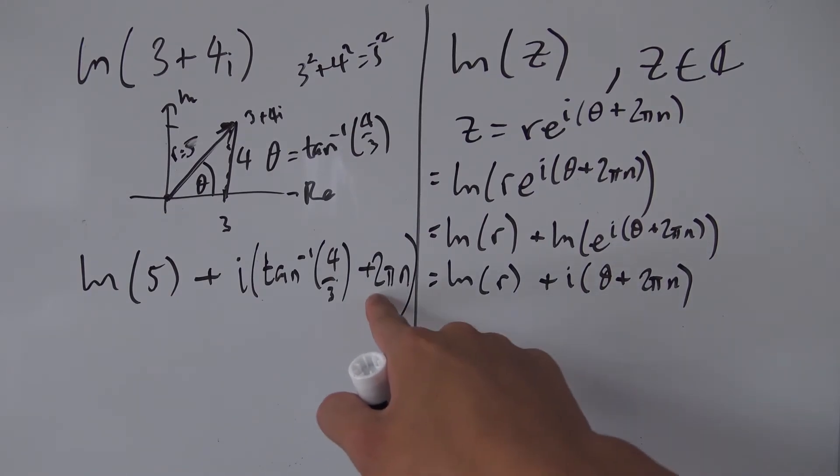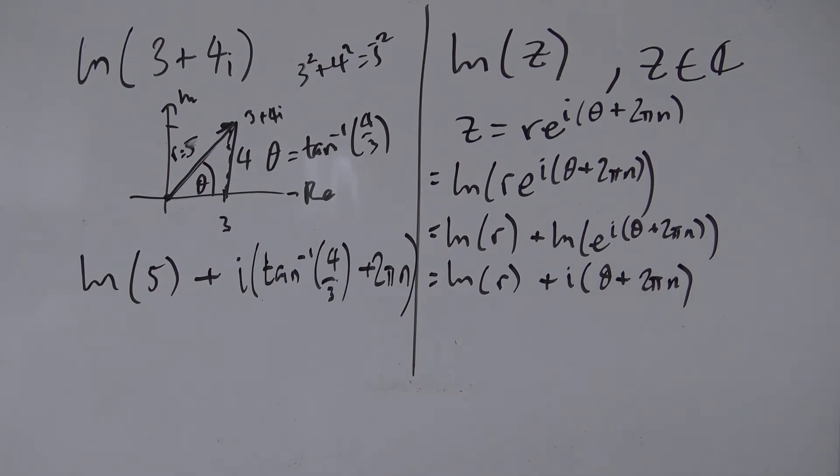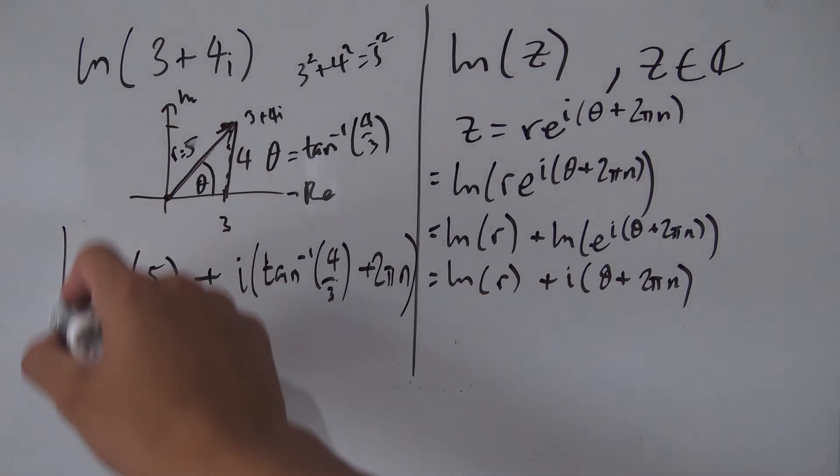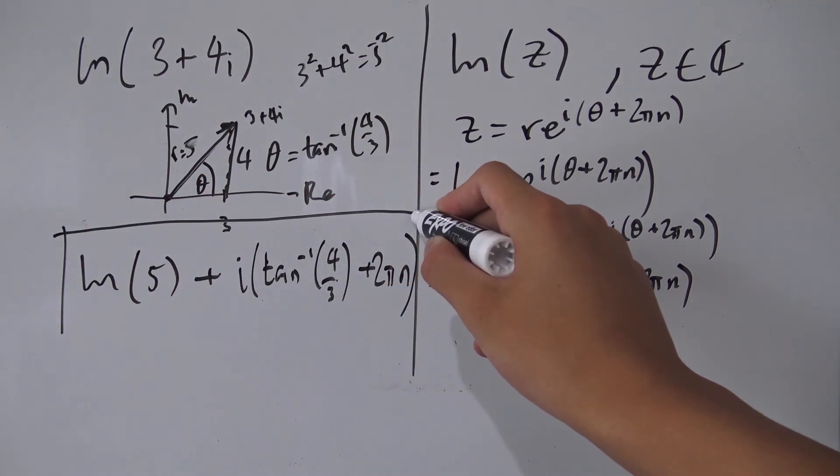And then plus 2 pi n. And if you want you can leave out this 2 pi n if you just want the principal solution and not the general solution. But yeah, that's the natural log of 3 plus 4i.